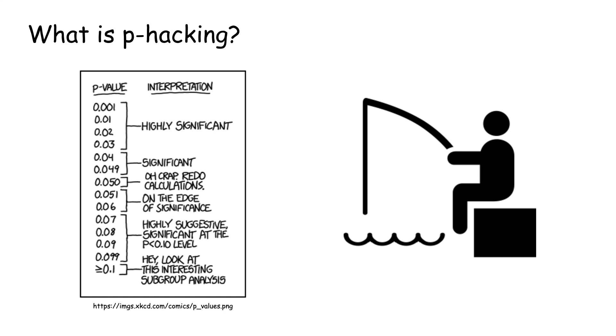What is p-hacking? P-hacking refers to a mix of practices which scientists use to find a p-value less than 0.05.